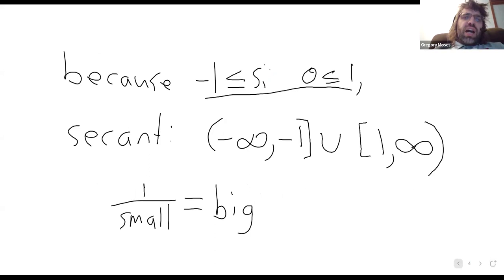Because the sine is stuck between negative one and one, that means that the cosecant is in this interval. Again, because the sine is small, the sine stuck between negative one and one, and one divided by a small number is a large number.